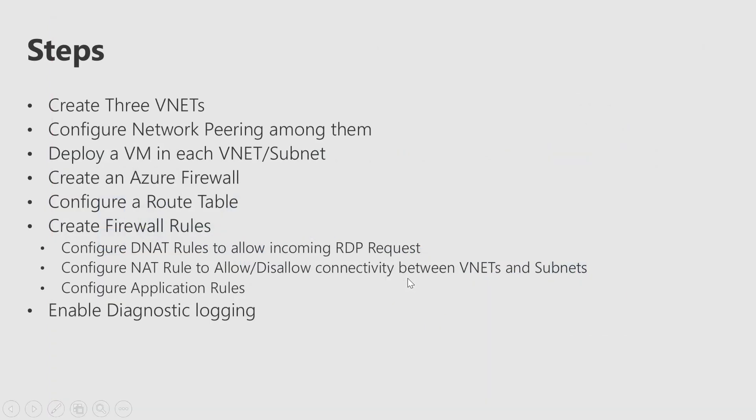When configuring Azure Firewall there are a few steps we need to take: creation of VNets — in my environment I have created three VNets, though you can test with a single VNet as well. You need to configure VNet peering, configure virtual machines in each subnet, create an Azure Firewall, configure a route table, and then configure rules to allow or disallow traffic. If required, you can also enable diagnostic logging.